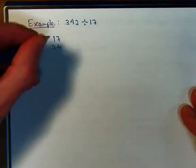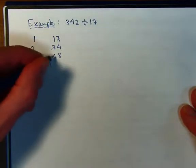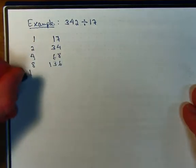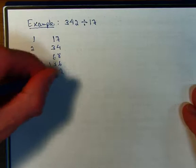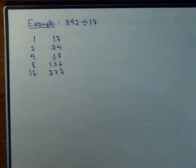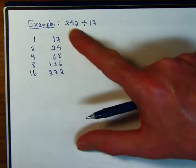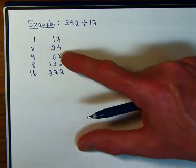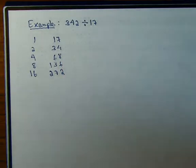Keep on doubling. Next row would be a 2 and a 34. 4, 68, 8, 136, 16, and 272. Now I think I can stop here because my right-hand column would be greater than 342 if I were to do another doubling. Let me just check my math here. 17 times 2 gives you 34, gives you 68, gives you 136, and that does give you 272.